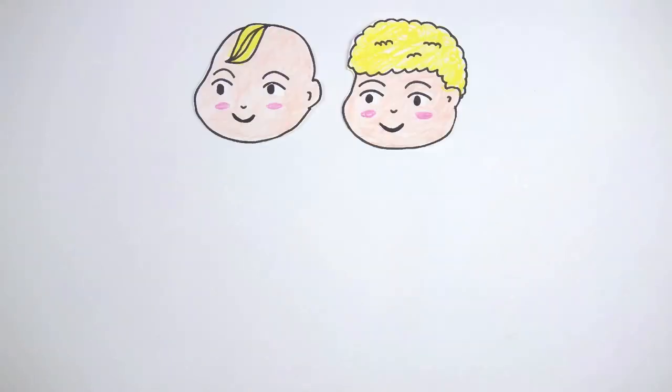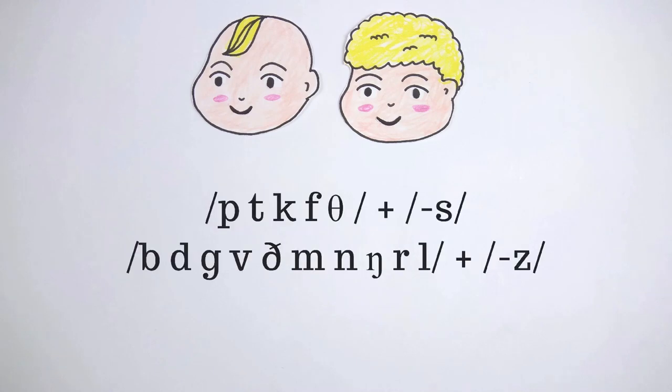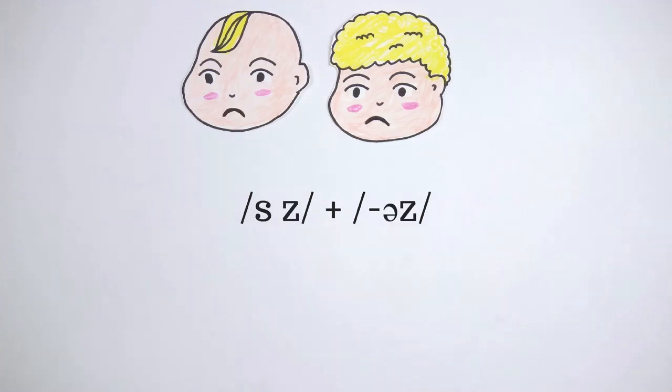Second, both preschoolers and first-graders could use correctly plural allomorphs, voiceless S after a voiceless consonant and voiced Z after a voiced consonant, but they could not generate the correct use of the plural allomorph EZ after S and Z even though they had the real word vocabulary of plural form, such as the plural form glasses.